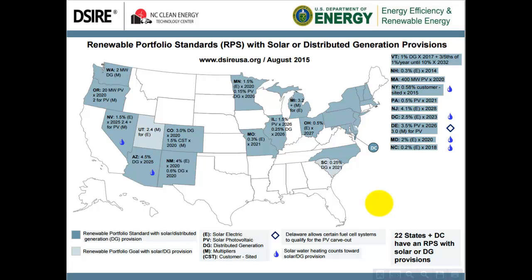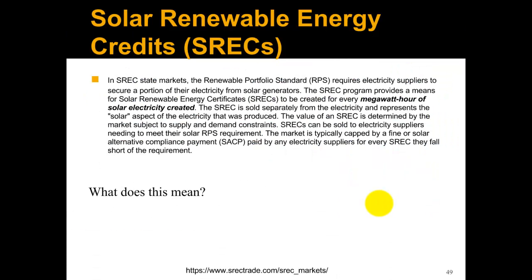So why is the renewable portfolio standard linked with the solar renewable energy credit? The 3.5% solar by 2026 in Delaware means utility companies must either own solar generation that produces that amount, or buy solar renewable energy credits to demonstrate compliance. Utilities must earn a certain number of SRECs each year — increasing each year until the 3.5% target — and if they don't earn enough, they pay a fine called the solar alternative compliance payment, or SACP. That's where the SREC market comes from.